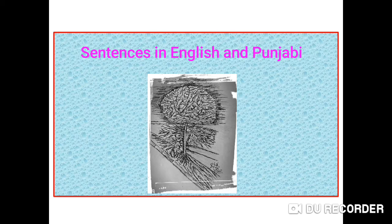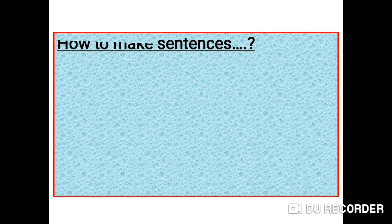Hello friends, there are three types of sentences in English based on their structure, which are easy to understand and follow if used on a daily basis. If any work is done following a method, it becomes easy and quick. But if the technique or rule is not properly known, time is wasted and it takes longer to learn. So let's learn how to make sentences in an easy way.